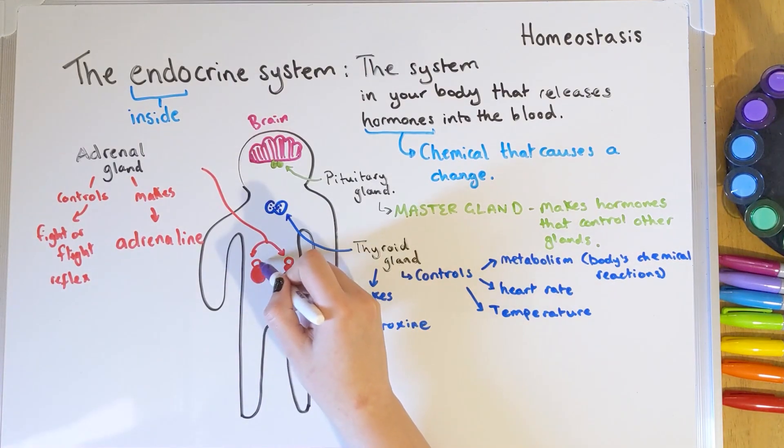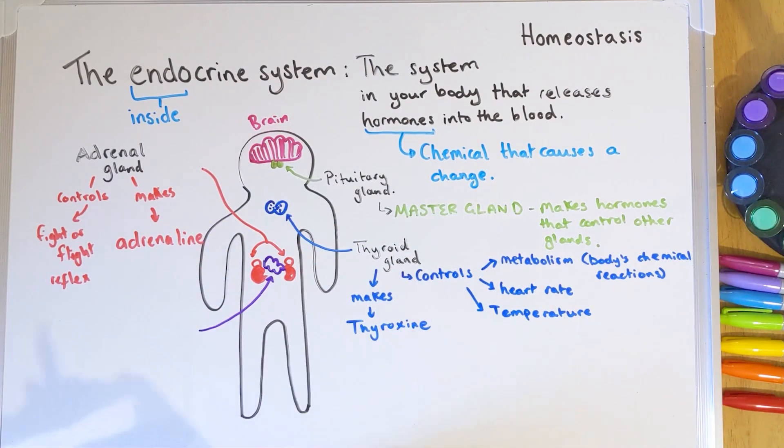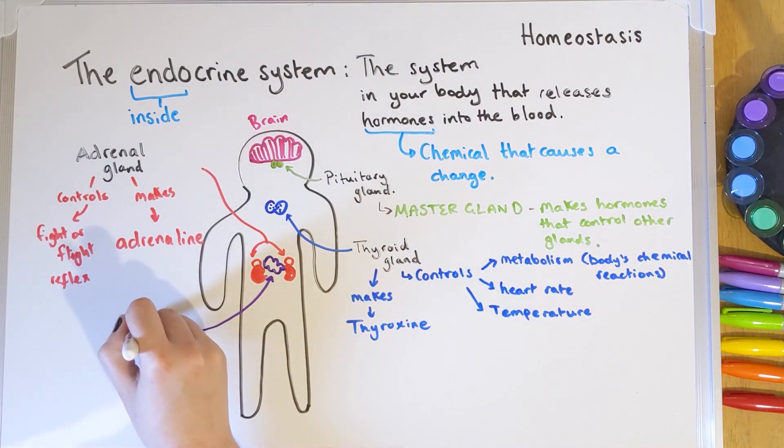The next gland isn't too far from the previous two, and you've heard of it before when we covered digestion and enzymes — it's your pancreas. Your pancreas makes all of the enzymes in digestion that we've looked at previously, and it also makes two very important hormones. Insulin is one of them, which reduces our blood sugar.